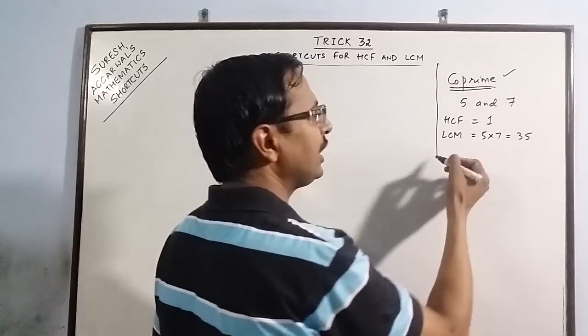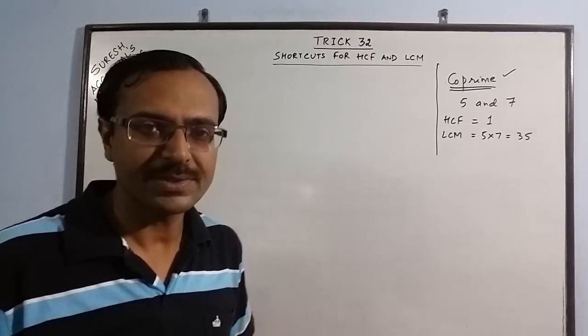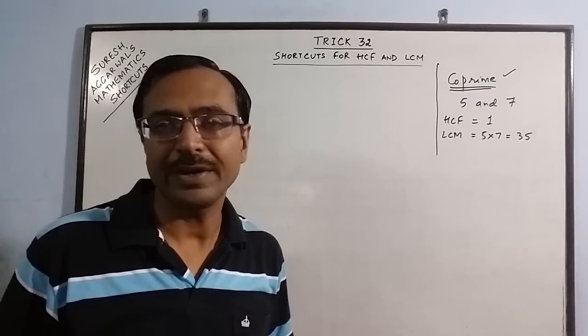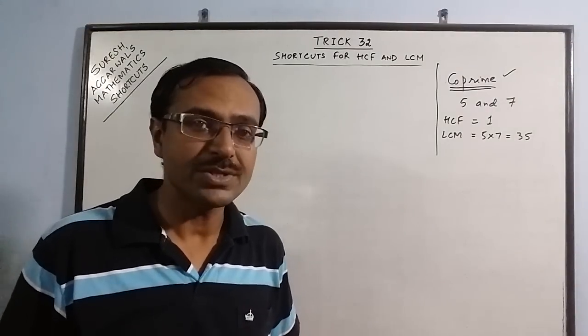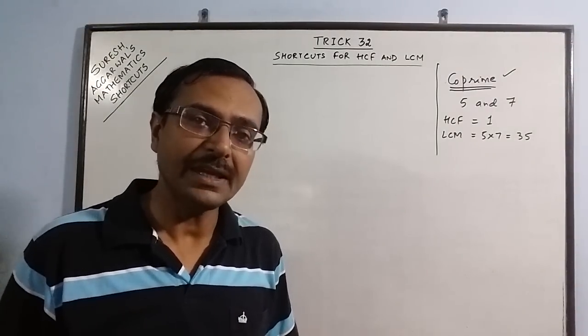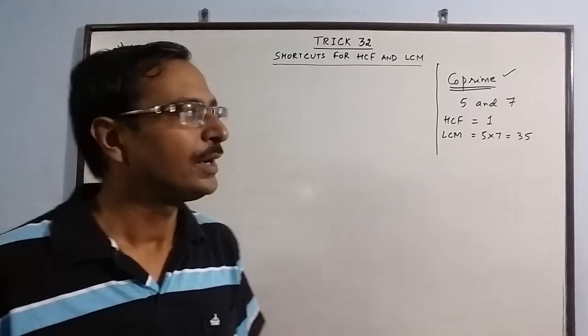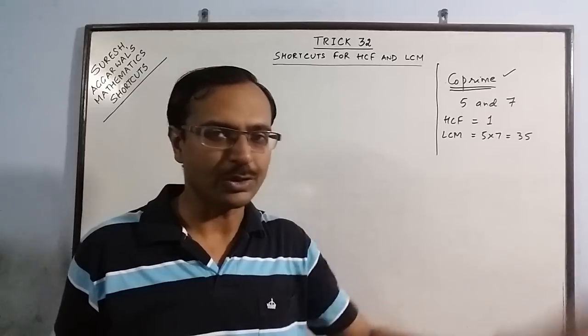So we do not need to apply traditional methods when we see co-prime numbers in our calculation. They may be questions involving direct calculation of HCF and LCM or questions involving taking LCM when we are dealing with rational numbers. So two co-prime numbers have HCF 1 and LCM equal to product of the two numbers.